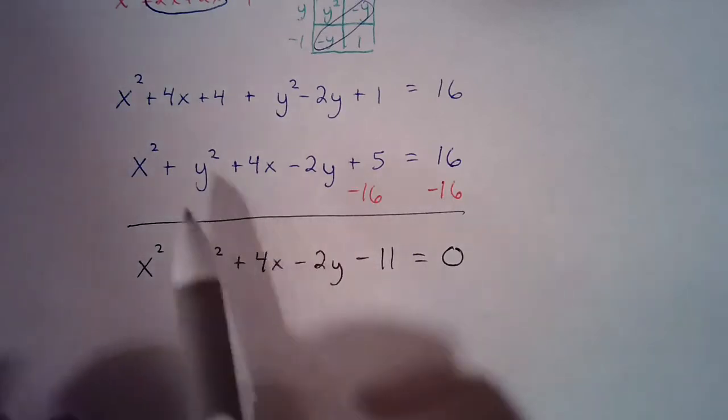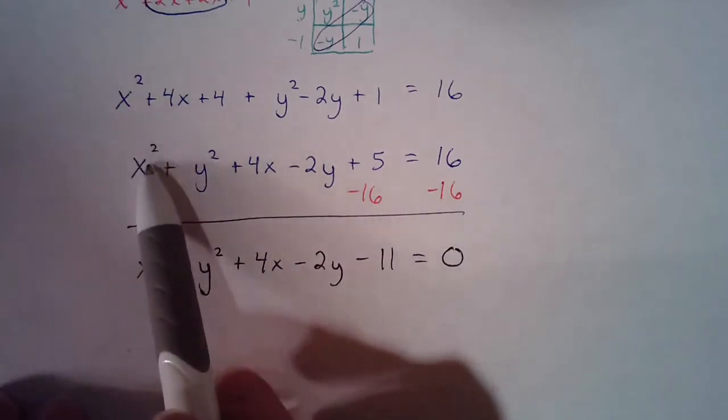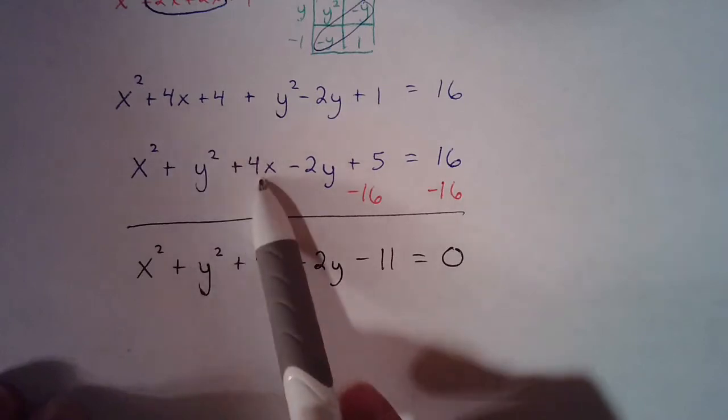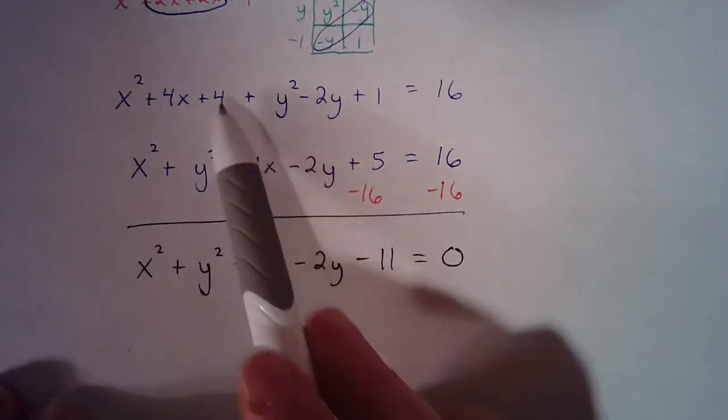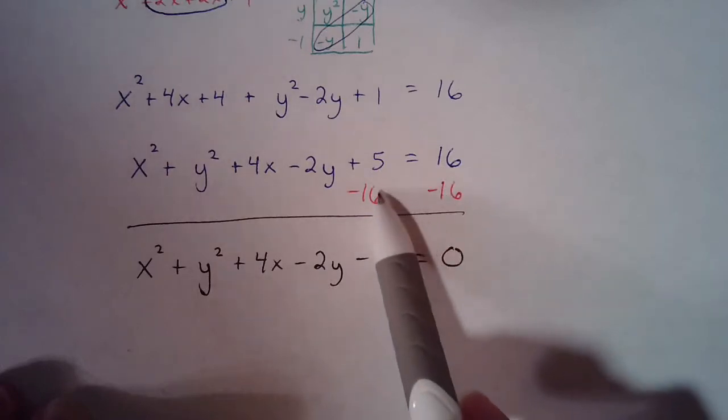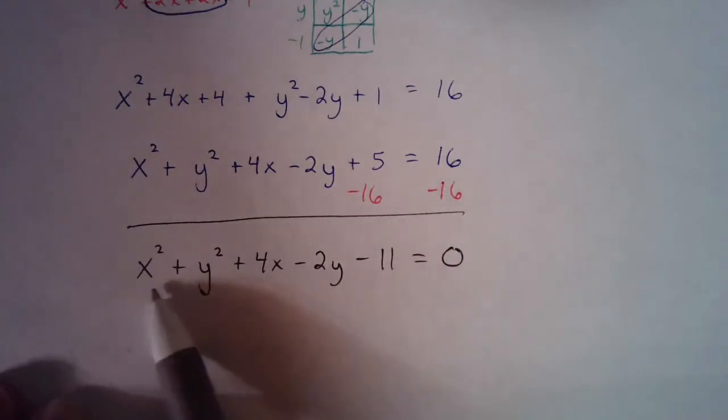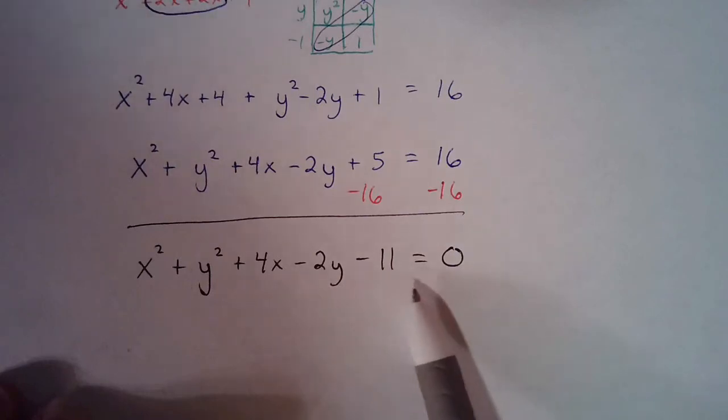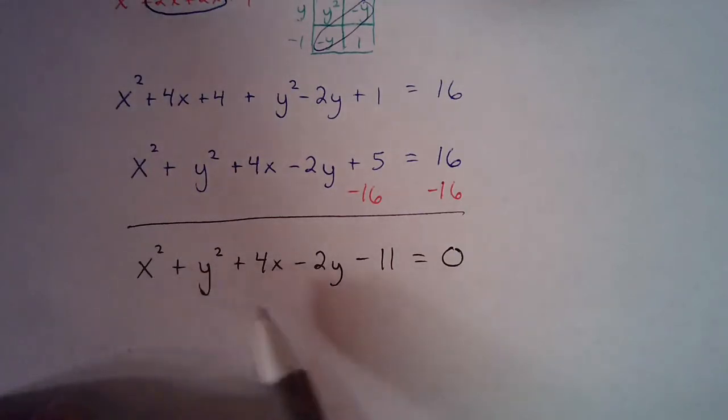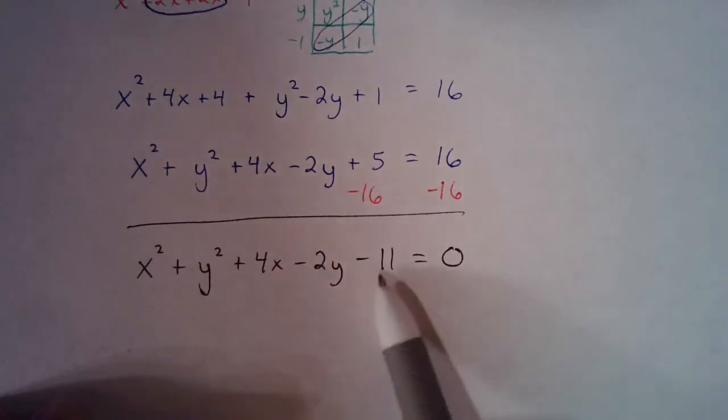Alright, so now we've just rearranged the order. So I've got my x², plus my y², plus 4x minus 2y. And I put the four and the one together to get five equals 16. Then I moved the 16 by subtraction over to the other side. And now we have this in general form or standard form with our highest exponents first. So x² and the y² working all the way down to our constants and then equaling zero.